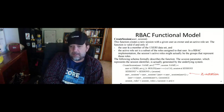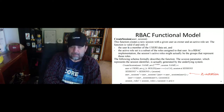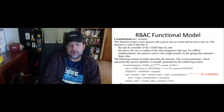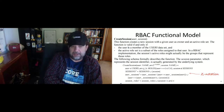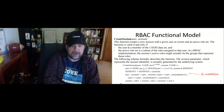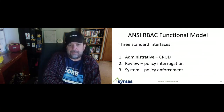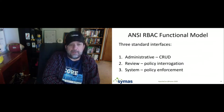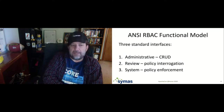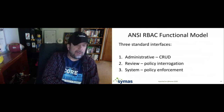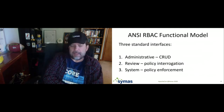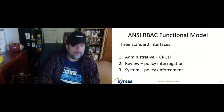One of the things about the ANSI INCITS 359 specification that I really appreciate is that it has a very explicit functional specification for the APIs. The shape of the APIs, the entities involved, and the processing that has to take place is laid out in Z notation — an implementation-agnostic way of describing functionality. These specifications are organized into three categories of API sets: the administrative APIs, which is the CRUD of the data — editing the policy; review, which is the interrogation and reporting of the policy; and finally the system, which is the enforcement — what happens at runtime for authorization calls.